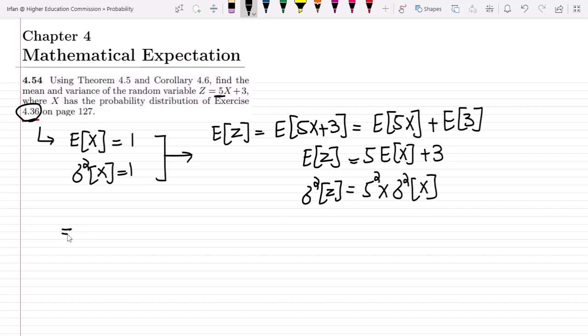Let me find the expected value of Z. We know the expected value of X is 1, so it would be 5 multiplied by 1 plus 3, which equals 8. The variance of Z would be 25 multiplied by sigma squared, which is 1, so it equals 25.